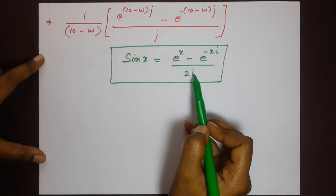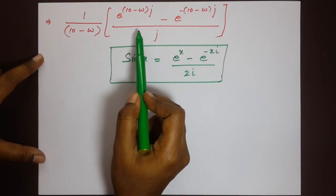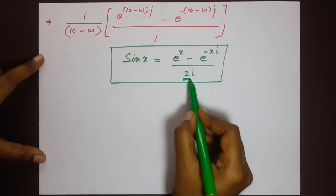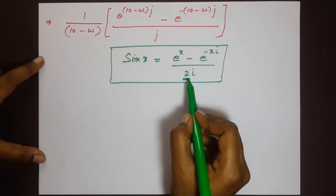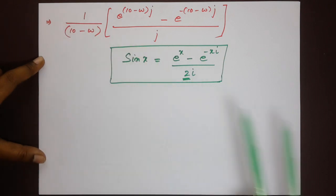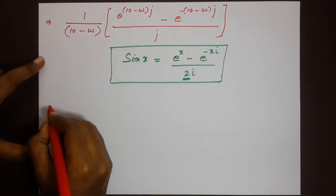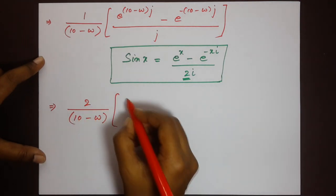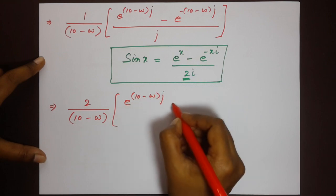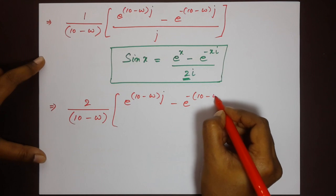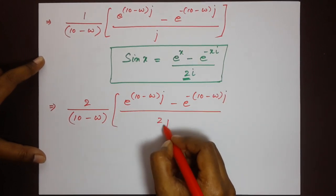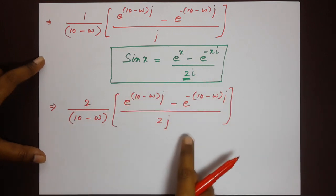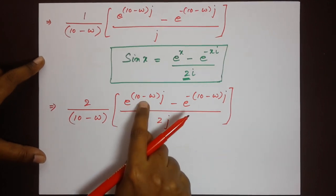To match the sine formula, we multiply and divide by 2, giving: [2/(10−ω)] · [e^(j(10−ω)) − e^(−j(10−ω))] / (2j). This entire bracketed term is now sin(10−ω), so the expression becomes 2·sin(10−ω) / (10−ω).